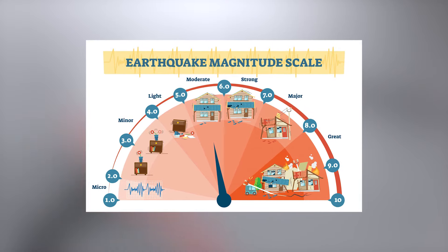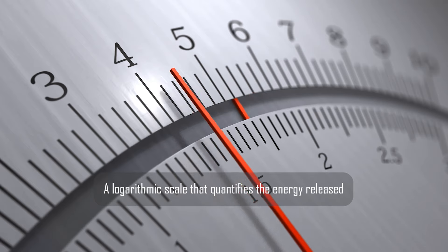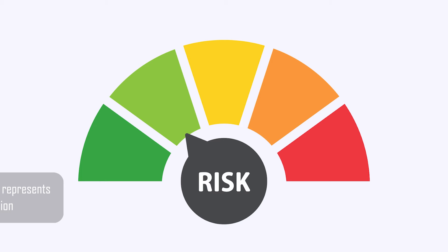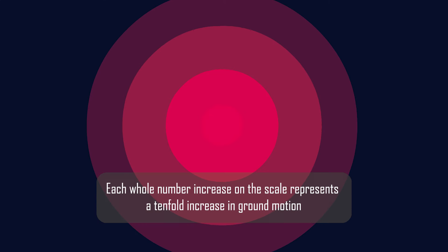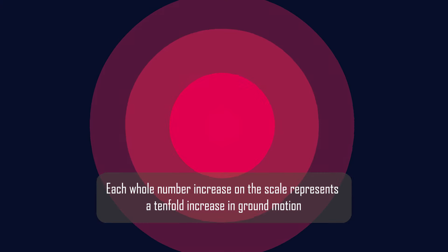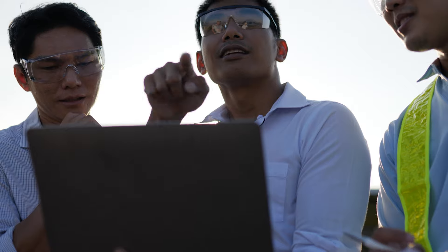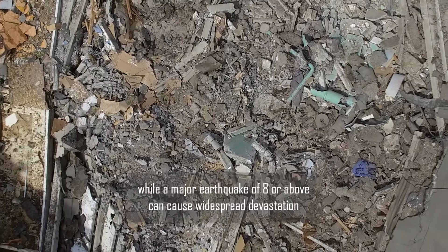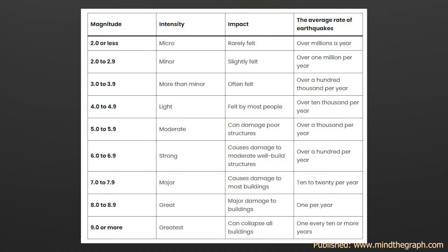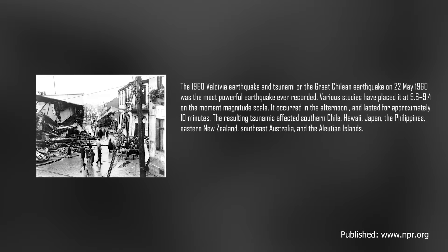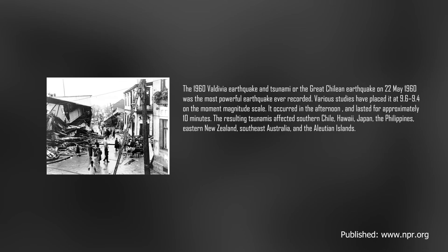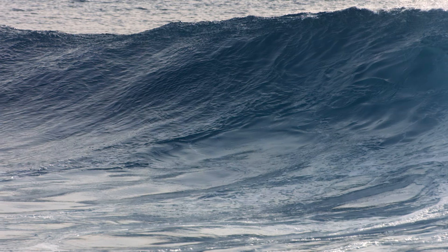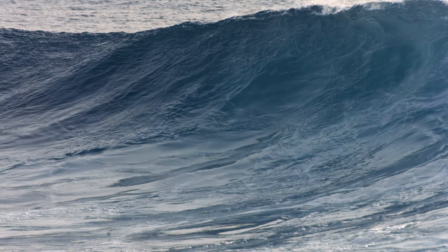भूकंप को Richter scale पर measure किया जा सकता है। ये एक logarithmic scale है जो release हुई energy को measure करता है। Scale पर हर एक whole number में बढ़ावा ground motion में 10 गुना ज़्यादा बढ़ावे को represent करता है। 2 magnitude का हल्का झटका मुश्किल से ध्यान देने योग्य होता है, जबकि 8 या इससे ज़्यादा magnitude वाला बड़ा भूकंप बड़े पैमाने पर तबाही का कारण बन सकता है। अब तक record किया गया सबसे बड़ा भूकंप 22 May 1960 को Chile में 9.5 magnitude का था। कभी-कभी भूकंप का impact सुनामी के रूप में 1000 किलोमीटर दूर तक जा सकता है।